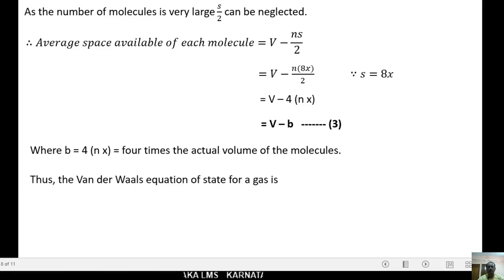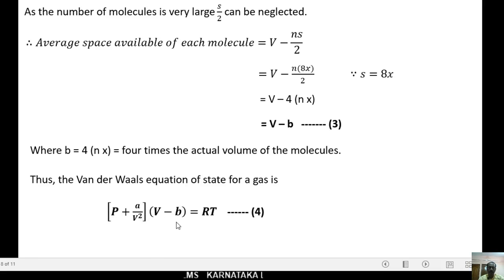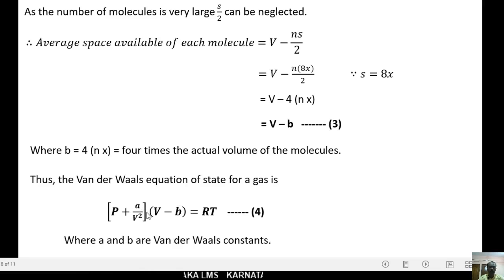Thus, the van der Waals equation of state for a gas is (P + a/V²)(V − b) = RT. Here, for an ideal gas PV = RT, but for a real gas the van der Waals equation is (P + a/V²)(V − b) = RT. This is for one gram mole of a gas, where a and b are van der Waals constants.